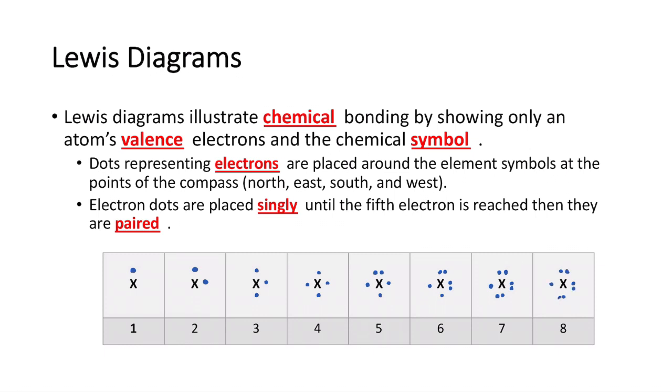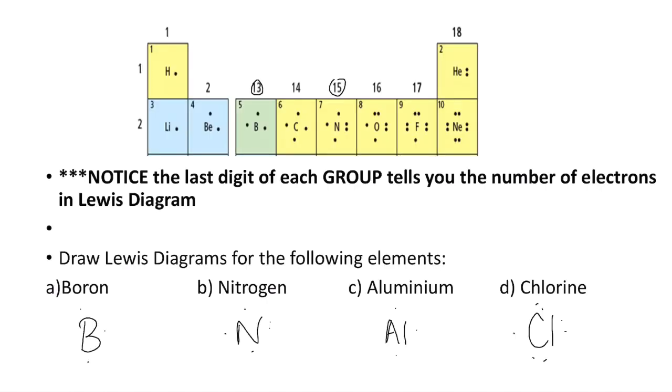This is just to make sure you don't make a mistake. That is what the Lewis dot structures or dot diagrams look like - a lot nicer, a lot less messy than our Bohr models. What I've got here at the top is an example of the first two periods of the periodic table. Notice that the last digit of each group tells you the number of electrons. This is exactly the same as we were doing for Bohr models.